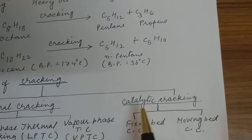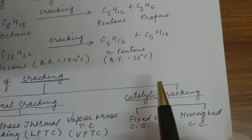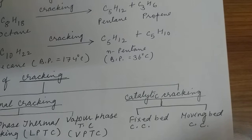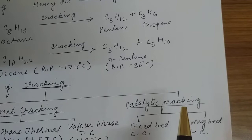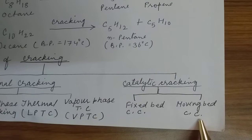Catalytic cracking — what is the meaning of catalyst? A catalyst is a substance used in a very minute amount which alters the rate of reaction. It may increase the rate of reaction or it may decrease the rate of reaction. If it increases the rate of reaction, it is called a positive catalyst. Catalytic cracking is the cracking carried out in the presence of a catalyst. It is of two types: fixed-bed catalytic cracking and moving-bed catalytic cracking.